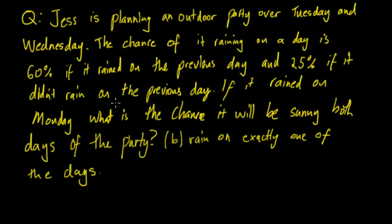In this video we're going to be going through an example of a Markov chain and we're going to be using a tree diagram to be able to calculate the answers. The question is: Jess is planning an outdoor party over Tuesday and Wednesday. The chance of it raining on a day is 60% if it rained on the previous day and 25% if it didn't rain on the previous day.